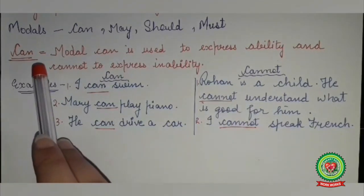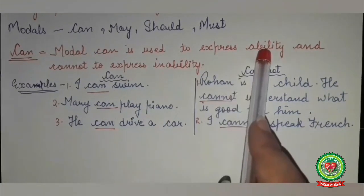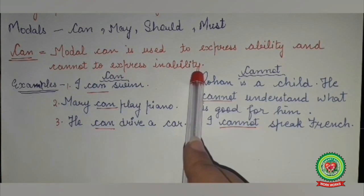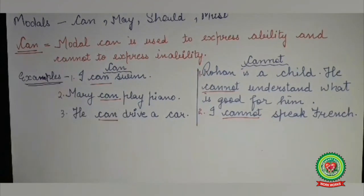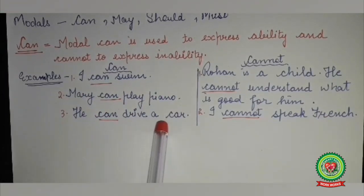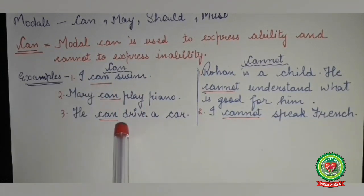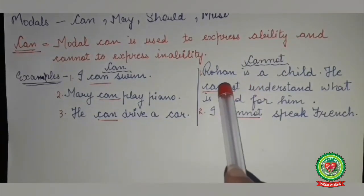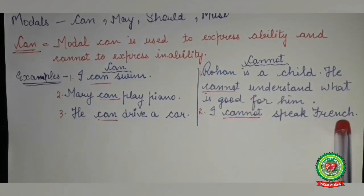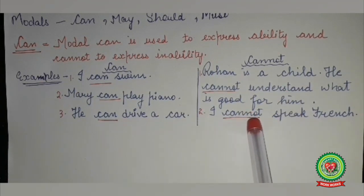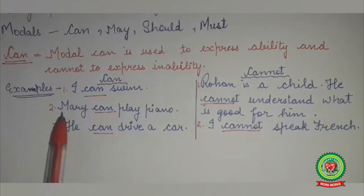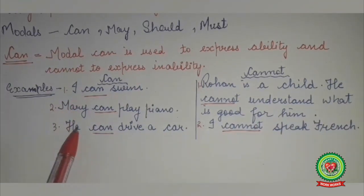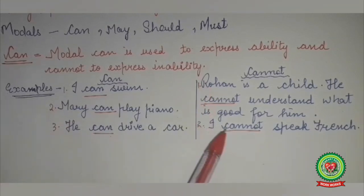Let us start with the use of modal can. Modal can is used to express ability and cannot to express inability. For example: I can swim. Mary can play piano. I can drive a car. In these sentences modal can is used to express ability. Now look at these examples: Rohan is a child — he cannot understand what is good for him. I cannot speak French. In these sentences, cannot is used to express inability, where the persons are not able to do something.